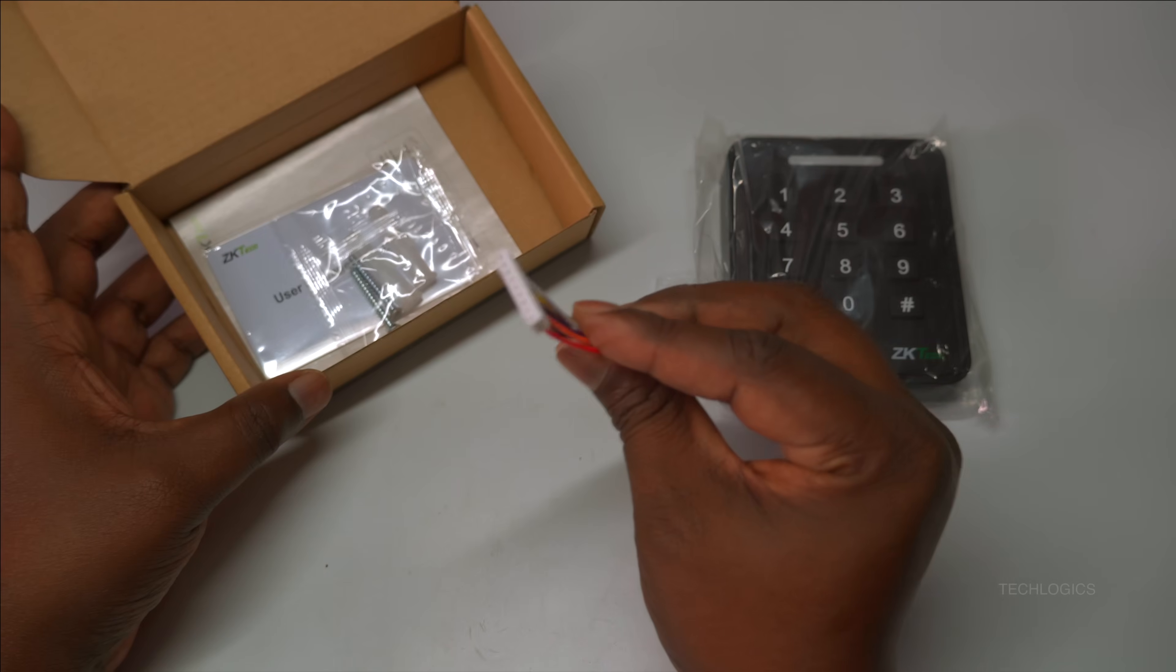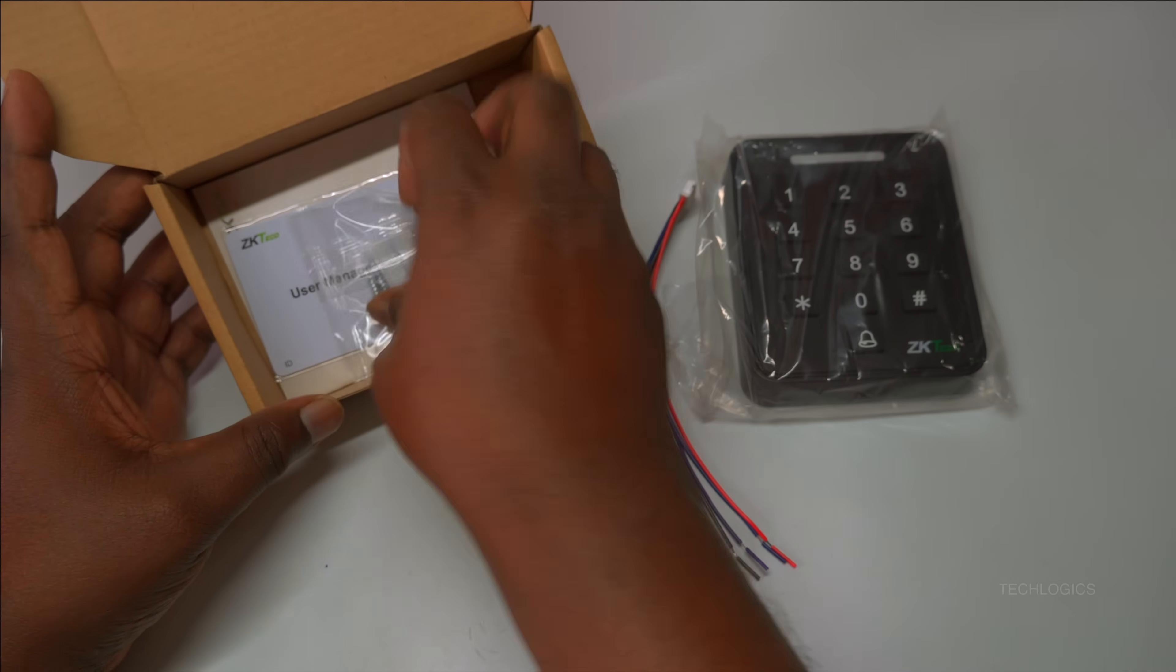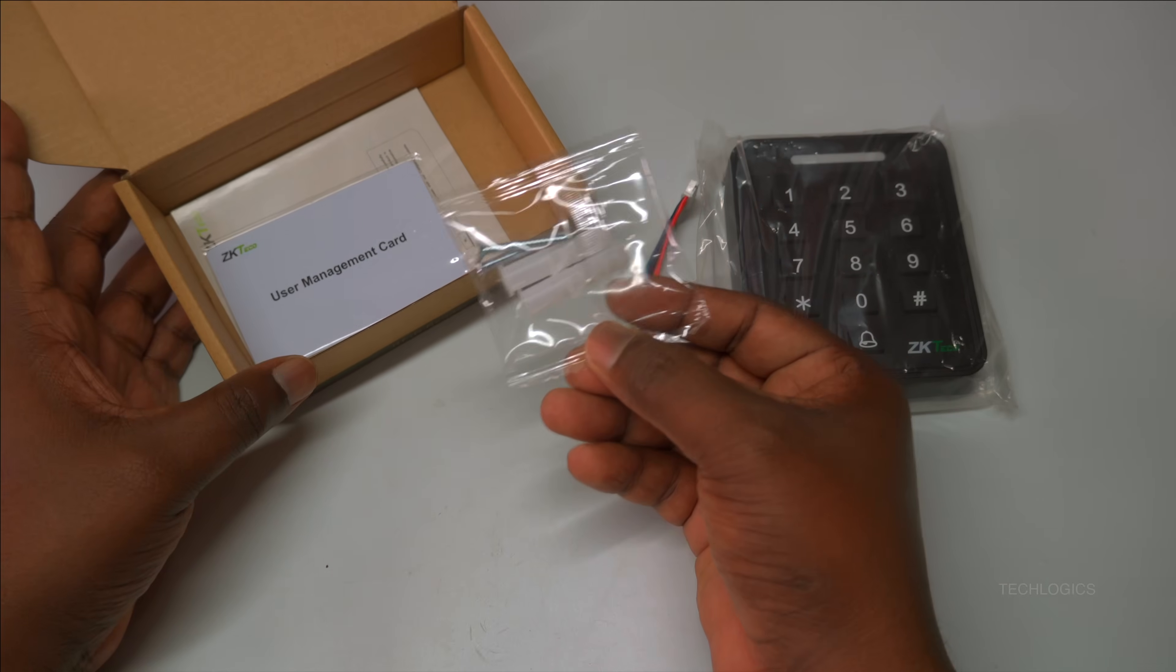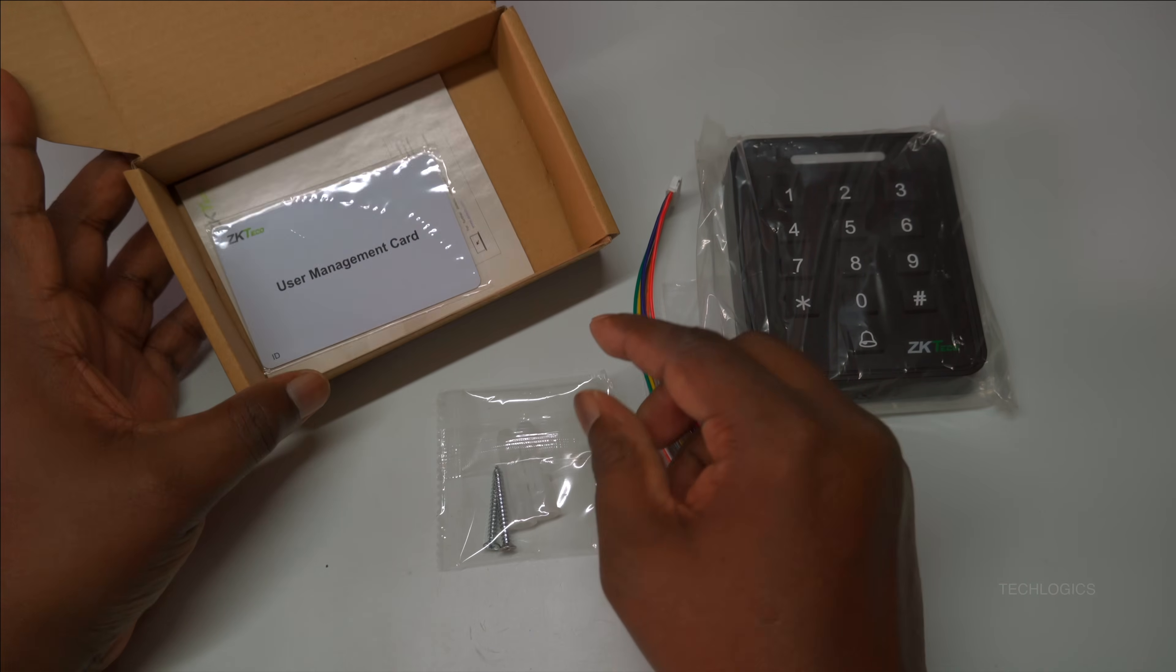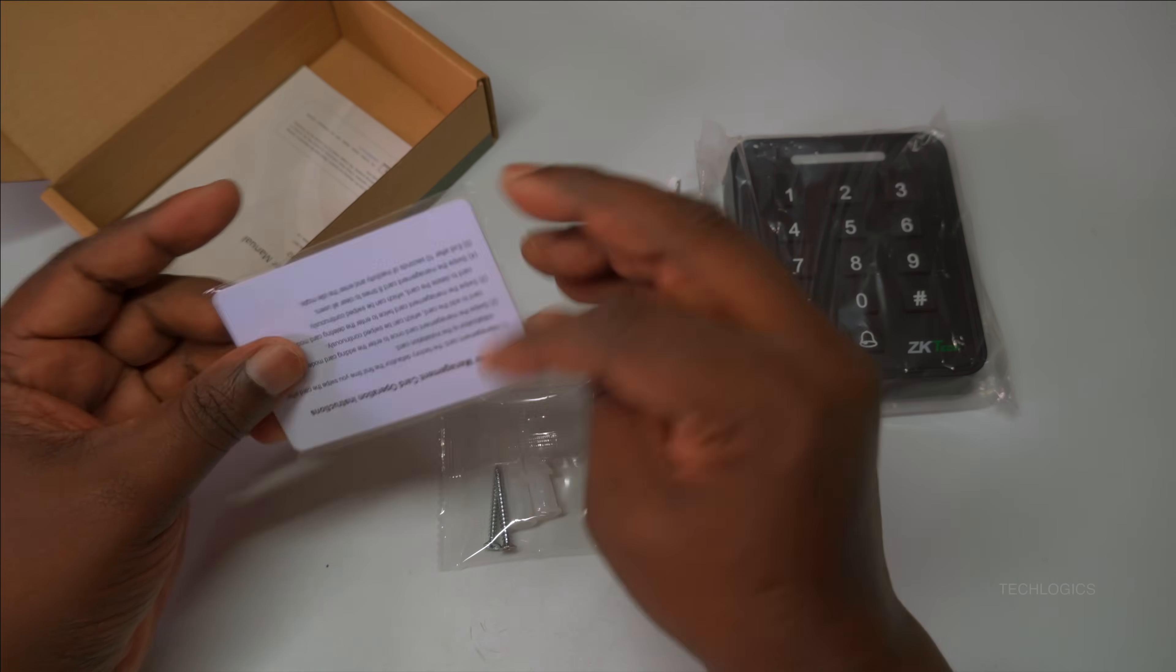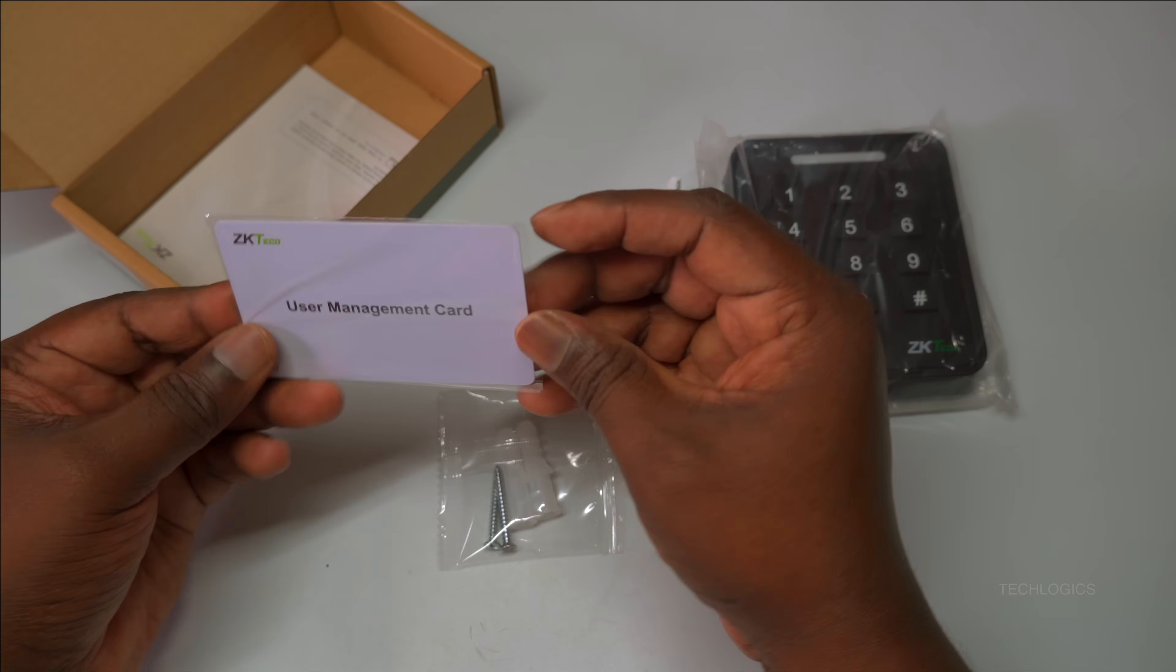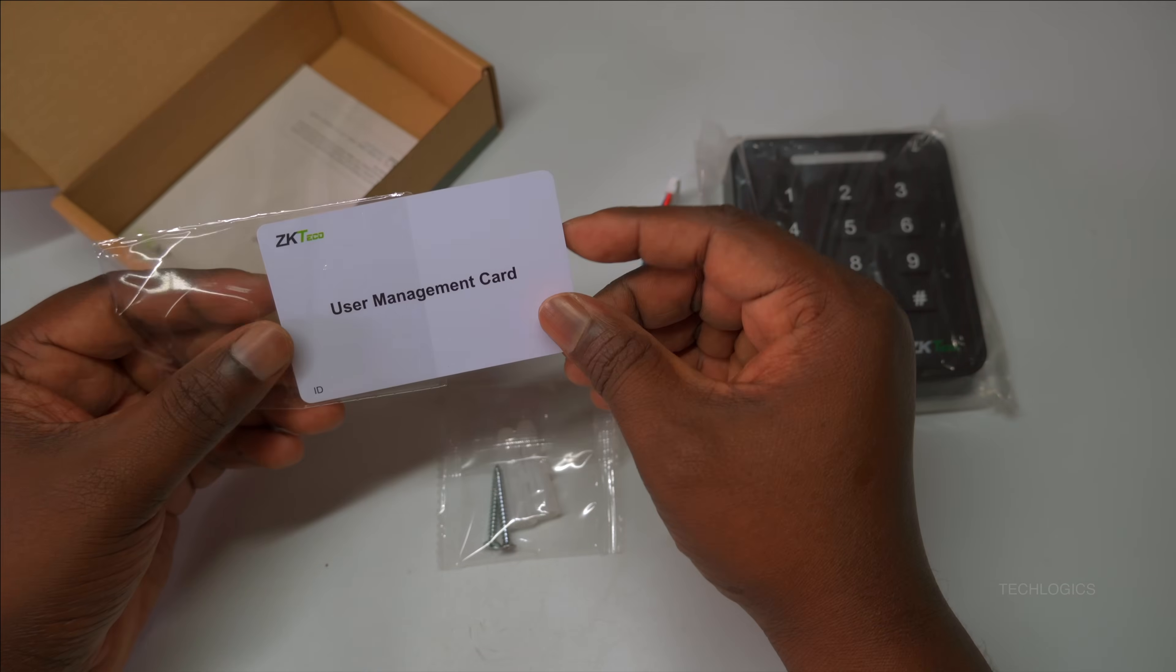Let's start by unboxing the ZKTECO SA40 access controller and exploring its features. This device supports dual authentication options, allowing users to use either a PIN code or RFID smart card for access. This flexibility makes it suitable for homes, offices, and commercial spaces, all without the need for keys or complicated software.